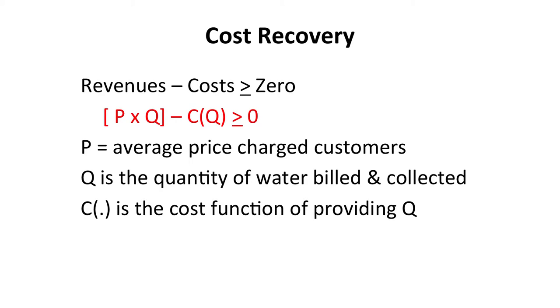There are many different tariff structures that can be used to raise the same total amount of revenue. The water utility may not be as concerned about the specific details of the structure of the tariff, but will be concerned about the average price customers pay, the amount of water they buy, and the total revenue billed and collected. Customers may respond to different prices in the tariff structure, which may affect the amount of water used and total revenues received by the utility. But in general, water service providers can live with many different tariff structures provided the total revenues are sufficient.